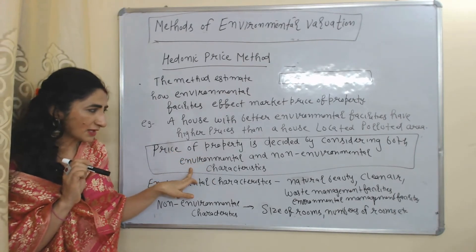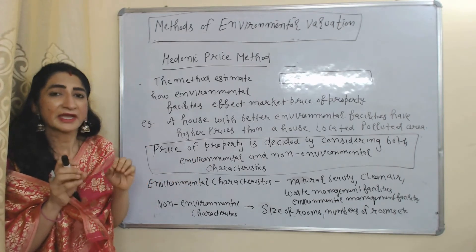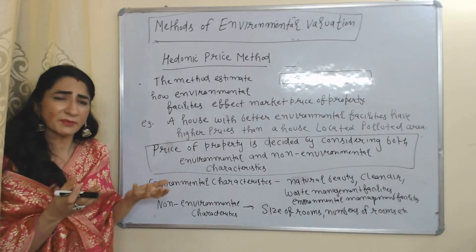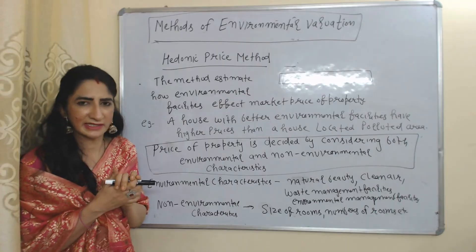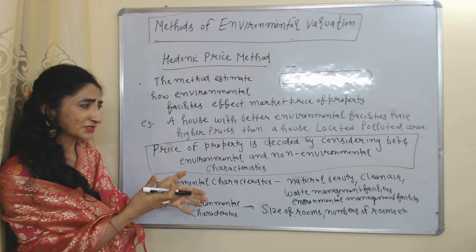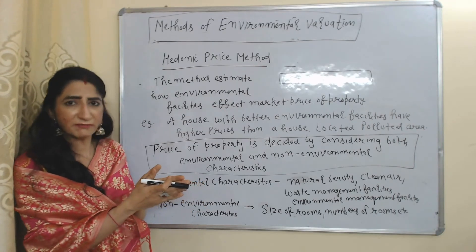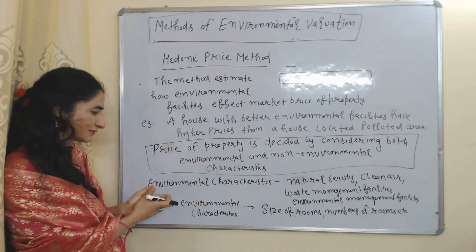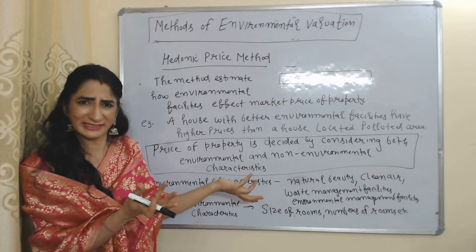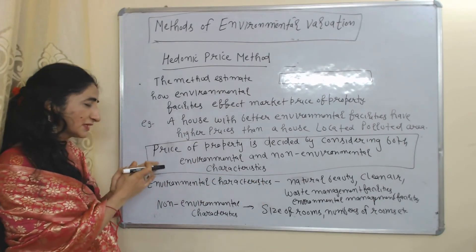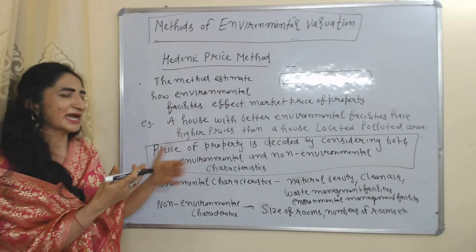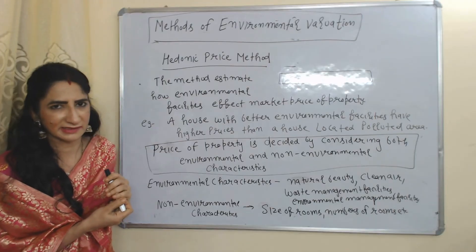According to this method, the price of a property is decided by considering both environmental and non-environmental characteristics. Environmental characteristics include natural beauty, clean air, and waste management facilities. Non-environmental characteristics include size of rooms, number of rooms in a house, etc. Whenever we buy any property, we consider both environmental characteristics as well as non-environmental characteristics.